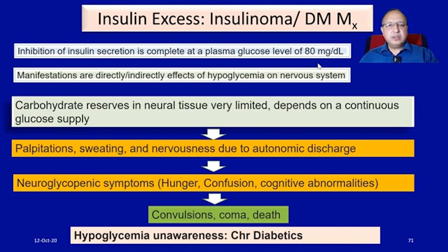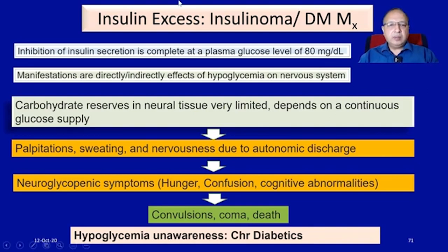Manifestations of increased insulin can be the direct effects of hypoglycemia or indirect effects on the nervous system. When a diabetic patient receives more insulin than needed due to an inadvertent mistake, the person will have hypoglycemic features reflective of nervous system stimulation. Carbohydrate reserves in neural tissue are very limited and depend on continuous blood supply, so when blood glucose falls below 80 milligram percent, symptoms of hypoglycemia begin.